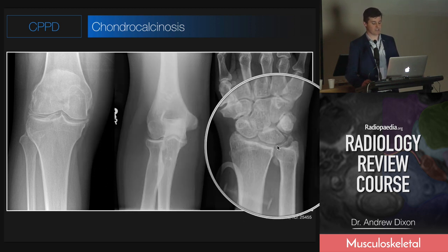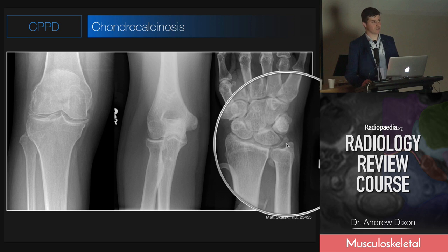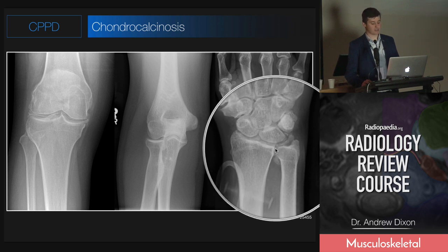Here it is at the wrist - classic speckled calcifications within the triangular fibrocartilage.